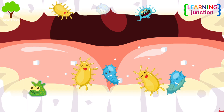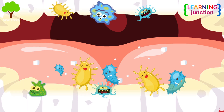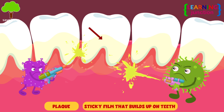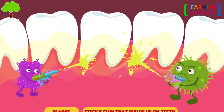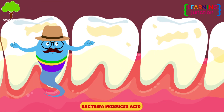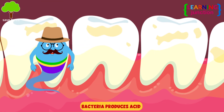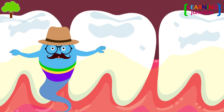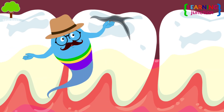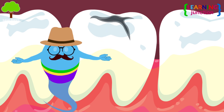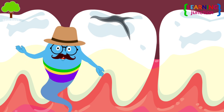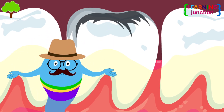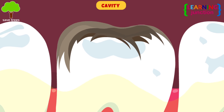Tooth decay, or dental caries, starts as plaque, which is the sticky film that builds up on your teeth. The bacteria found in plaque produces acid that destroys the surface of your teeth. The acid can eventually cause your tooth to decay, which can also lead to it creating a hole in your enamel. And this is how you get a cavity.